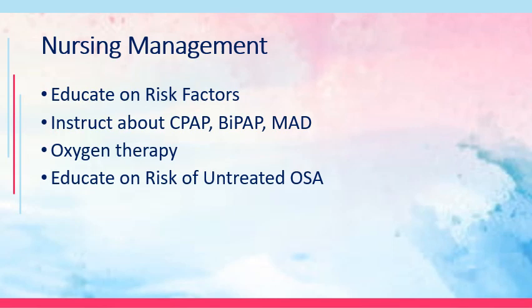For nursing management: educate patients on risk factors — the effect of risk factors in pulmonary disorders is cumulative, so diet can help over time. Instruct about CPAP, BiPAP, and MAD use and troubleshooting. Provide oxygen therapy — high-flow oxygen is usually recommended. Educate on the risks of untreated OSA: if not treated it can result in hypoxia, hypoxemia, cor pulmonale, hypertension, and other complications.